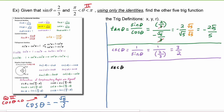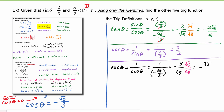Secant of theta is one over cosine of theta, which is one divided by negative radical five over three. This becomes negative three over radical five. Rationalizing by multiplying by radical five over radical five, we get negative three radical five divided by five.